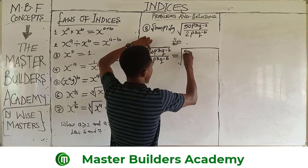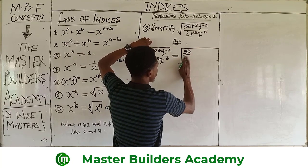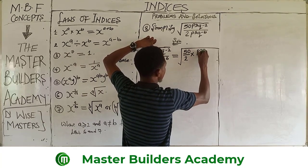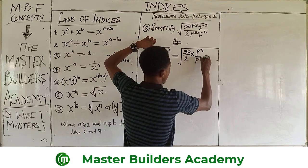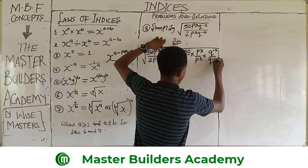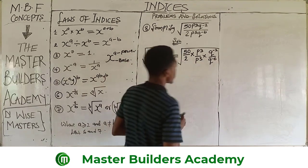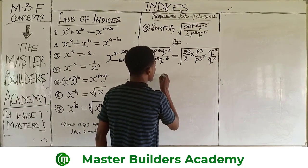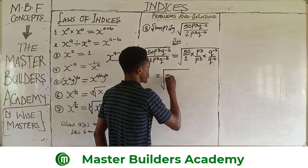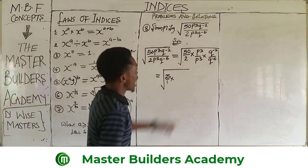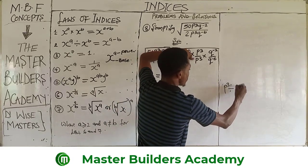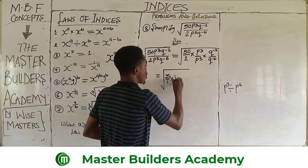We create the square roots, then separate: 50 over 2, then multiply by p times p cubed all over p raised to power 5, then multiply by q times q raised to power negative 2 over q raised to power 8. Applying the laws: 50 divided by 2 gives 25. For the p terms, p over p³ is the same as p cubed divided by p raised to power 6 — we subtract powers: take the first power minus the second power, which is 5.